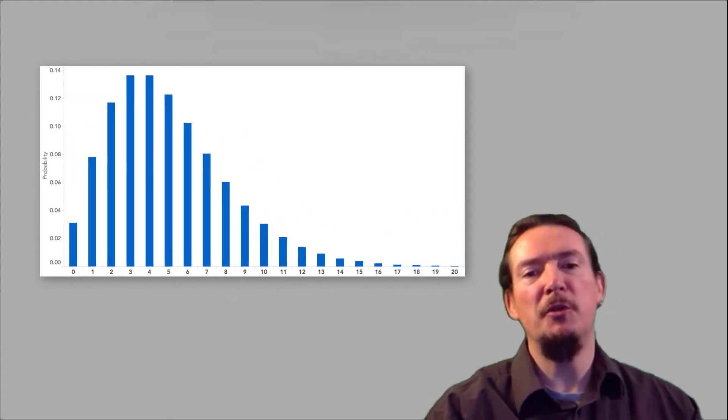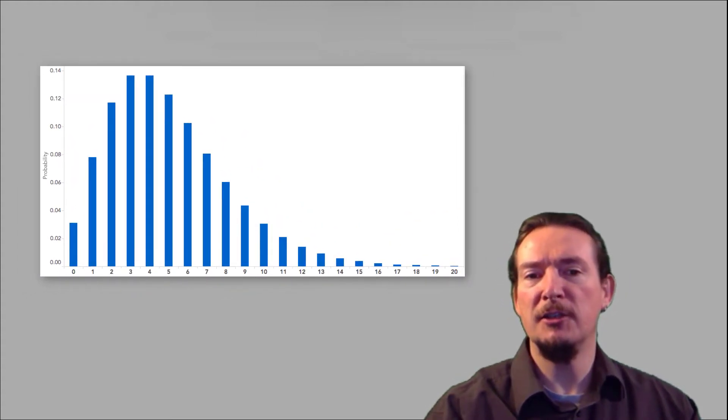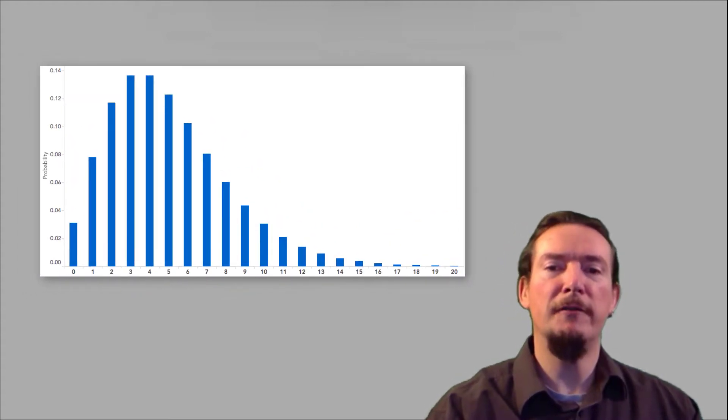Back to the maths. Today we'll be taking a look at the binomial distribution and how we can use the Casio Classwiz calculator to generate both single and cumulative probability values.